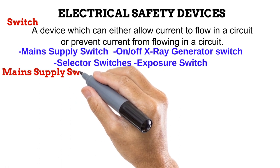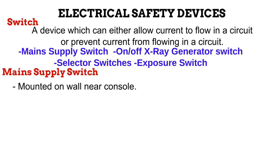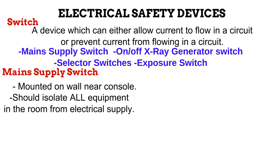The main supply switch is usually mounted on the wall near the console, and should be easy to access with nothing placed between the radiographer and the switch. The main supply switch should isolate all equipment in the room from electrical supply, meaning every piece of equipment in a diagnostic radiography room should be under the control of one main supply switch. If you have an X-ray machine and a skull unit in one room, they should both be controlled by one switch. In an emergency, turning off the single main supply switch gets everything done quickly — if there were multiple switches, it would take more time, and in an emergency, every second counts.